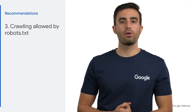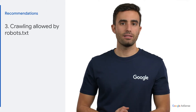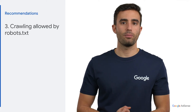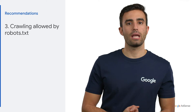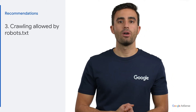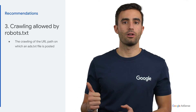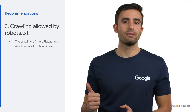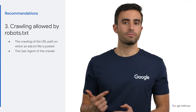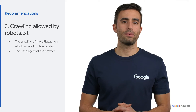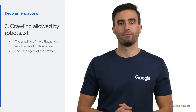Recommendation 3: Ensure crawling is allowed by robots.txt. The ads.txt file for a domain may be ignored by crawlers if the robots.txt file on a domain disallows one of the following: the crawling of the URL path on which an ads.txt file is posted, or the user agent of the crawler. Please check the links in the description of this video to see examples on the help center.